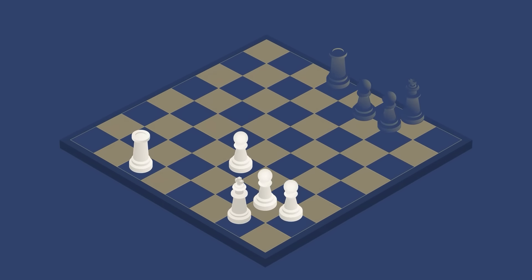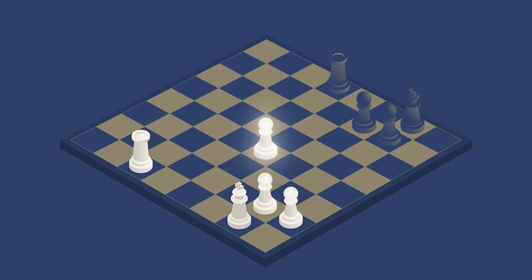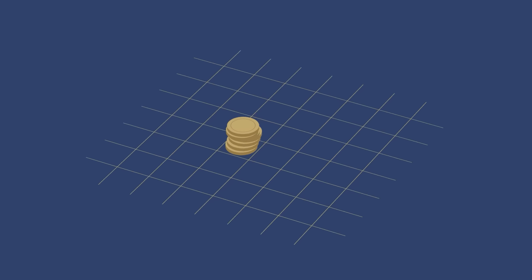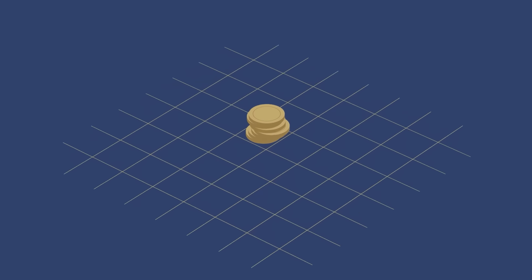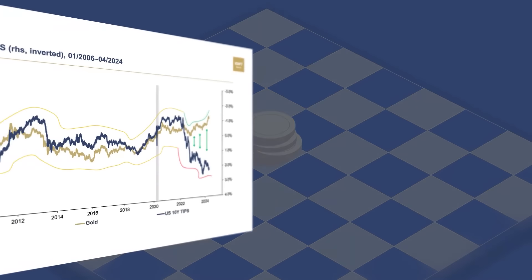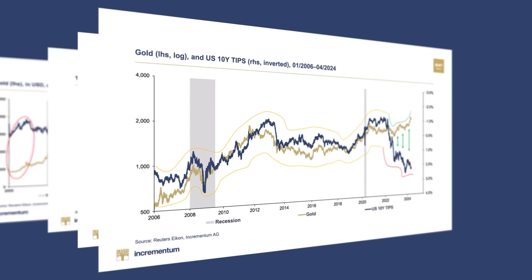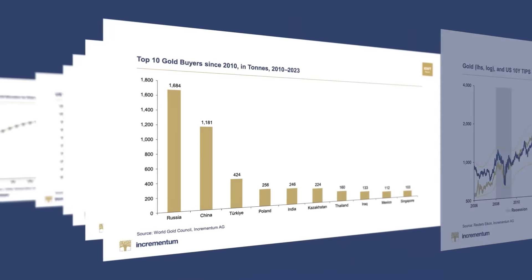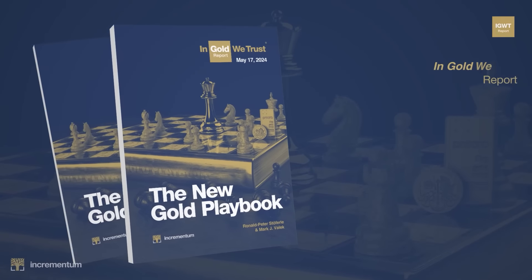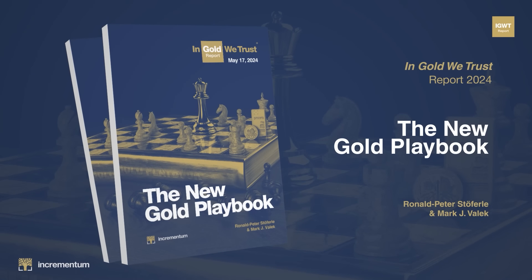Like an experienced chess player who adapts his strategies to his opponent's moves, the investment world requires a similar degree of flexibility. Investors need to be aware that the investment world is not a static terrain — rather, it resembles the complexity of a 3D chess game. In recent years, there have been a number of structural changes that have shaped not only the gold market, but also the entire financial system in the geopolitical landscape. In our view, these transformations require the development of a new gold playbook.